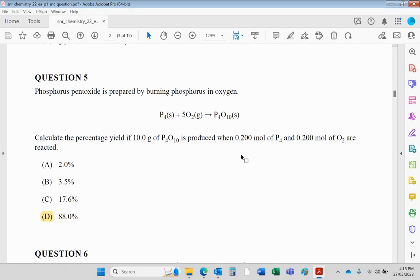Question five: phosphorus pentoxide is prepared by burning phosphorus in oxygen, and they kindly give you the equation. They ask for the percentage yield if 10 grams of P4O10 is produced when 0.2 moles of P4 and 0.2 moles of O2 are reacted. This is not really a multiple choice question—it's worth a lot more than one mark because there's a lot of steps needed to work this out. Effectively, 10 grams is being produced—that's our actual yield. But we want to work out what the theoretical yield should be. To do that, we look at the two reactants: 0.2 mole of each, but they react in a one to five ratio. So effectively, 0.2 mole of P4 will be surplus. The oxygen is going to be all used—it's the limiting reagent.